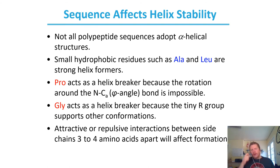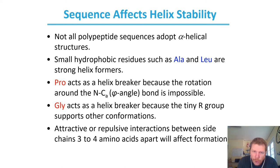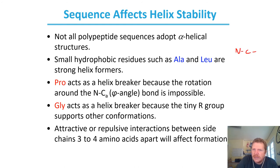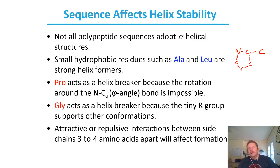Not all polypeptide sequences adopt an alpha helical structure. If you have a sequence with alanine or leucine — small hydrophobic residues — those are highly likely to be involved in the formation of an alpha helix. Proline, on the other hand, comes back and cyclizes onto the backbone, which limits the rotation of the polypeptide backbone. So proline acts as a helix breaker — if you have a proline, chances are you're not going to be involved in alpha helix formation.